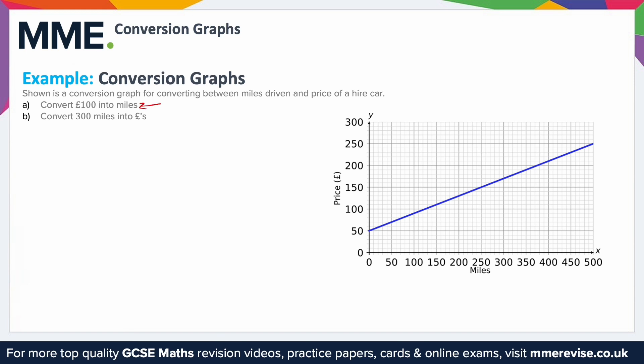So if we had a budget of £100, all we need to do to figure out how far we're allowed to go is find where 100 is on our price axis — our y-axis — go across to where that meets the graph, and then go down to where it meets the x-axis. You can see it's exactly halfway between 100 and 150, so that's 125 miles.